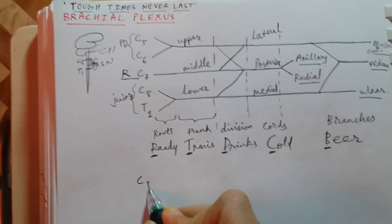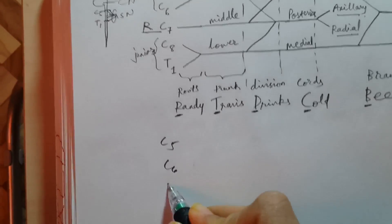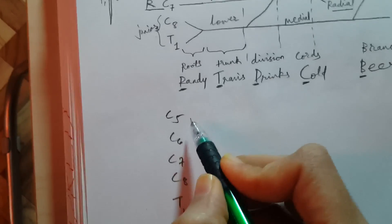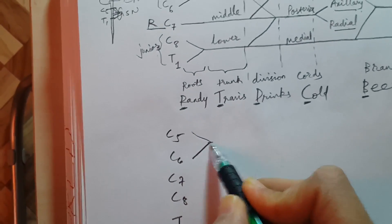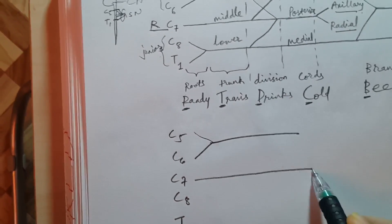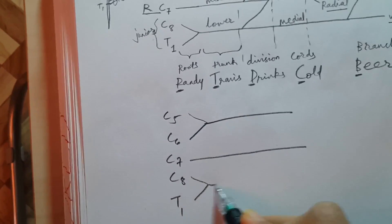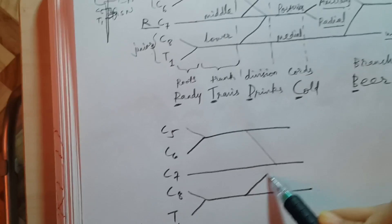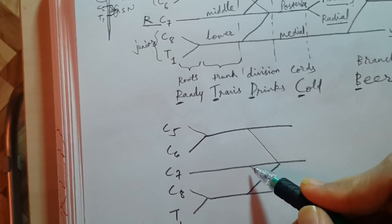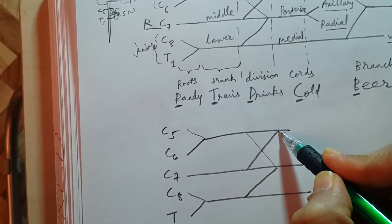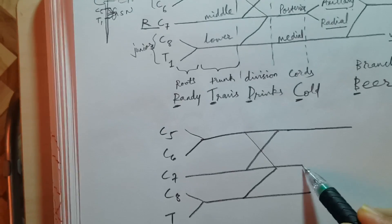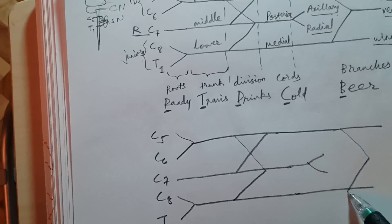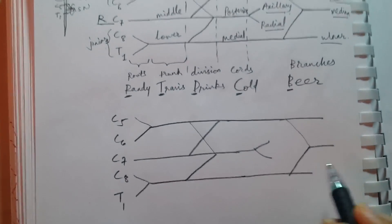To draw it quickly: C5, C6, C7, C8, and T1 — C5 and C6 are program directors going together, C7 the resident goes alone, and C8 and T1 juniors go together. The program directors help the resident, the juniors help the resident, but the resident gives his branch to the program directors — upper side. Then we get two branches from the posterior cord and three branches from the remaining segments.